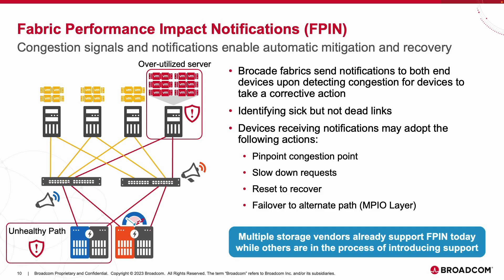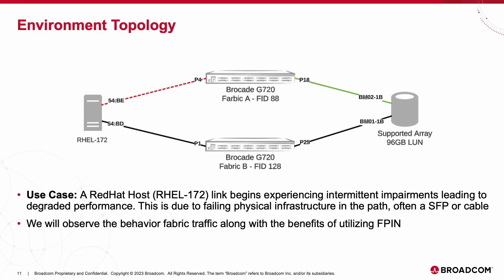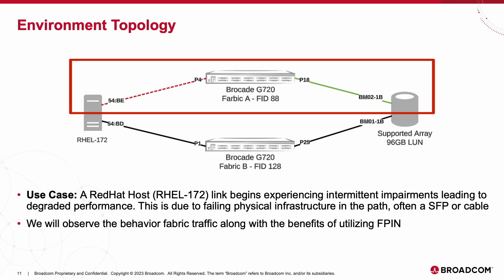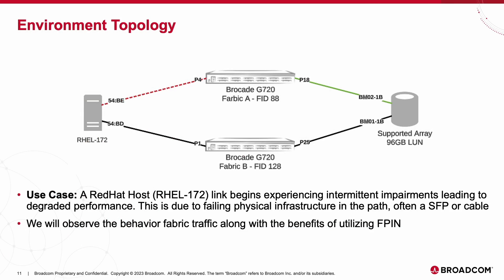Before we get started with our FPIN demonstration, let's get familiar with the environment we will be working with. We are running a dual-fabric setup where the currently active path is Fabric A. On the left-hand side, we have a Red Hat host, REL172, running version 8.7, attached to port 4 of Fabric A and port 1 on Fabric B. On the right-hand side, we have a NetApp A300 array with a 96-gig LUN configured, connected to both Fabric A and B through ports 18 and 25, respectively.